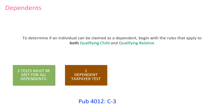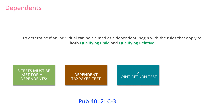Use your interview skills, because some taxpayers, particularly students, may not understand how to answer this question correctly. The joint return test: generally, a married person who files a joint return cannot be claimed as a dependent. The exception is if the joint return is filed strictly to claim a refund and there would be absolutely no tax liability for either spouse on separate returns. This is very rare.